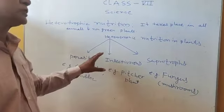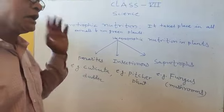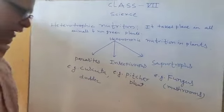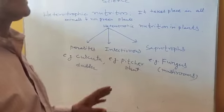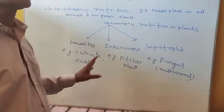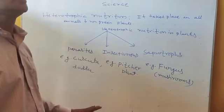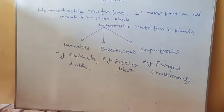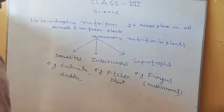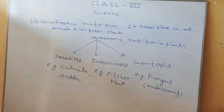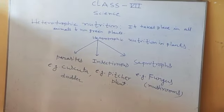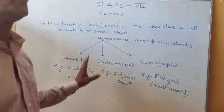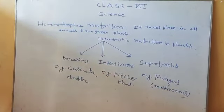By photosynthesis, the balance of oxygen and carbon dioxide is also maintained. We know that carbon dioxide is formed due to different types of vehicles, factories, etc. This carbon dioxide is balanced by the oxygen formed during photosynthesis.